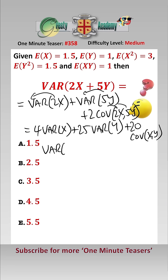Now VAR(X) is equal to E(X²) minus E(X) squared, which equals 3 minus 1.5 squared, which is 0.75.